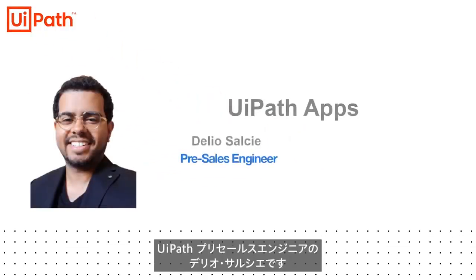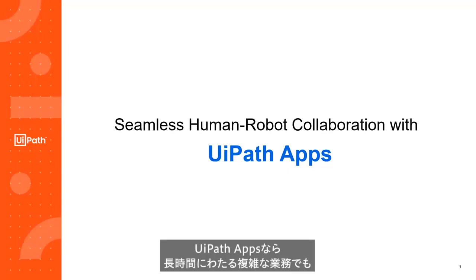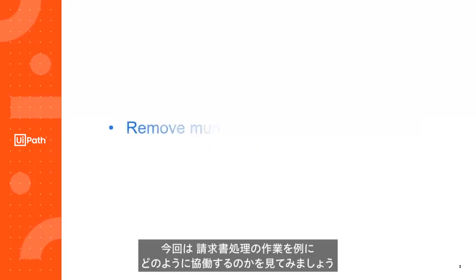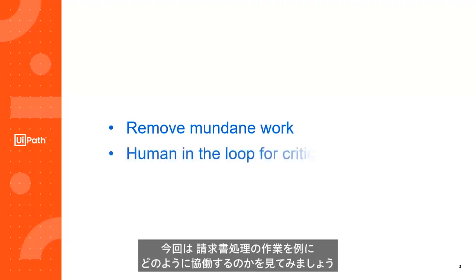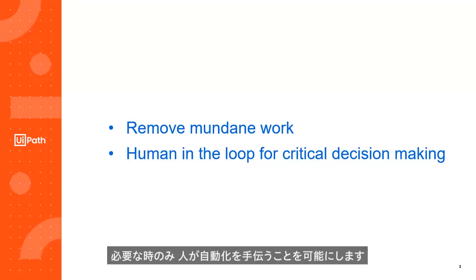Hello, my name is Delio Salsier. I'm a pre-sales engineer at UiPath. Today we're going to be going over UiPath apps. UiPath apps help automate long and complex processes from start to finish through seamless human-robot collaboration from a single platform. Here we will look at a complex automation for invoice processing that requires human-robot handoff tasks. The goal is to remove the mundane work and bring humans in the loop only when needed to make critical decisions.